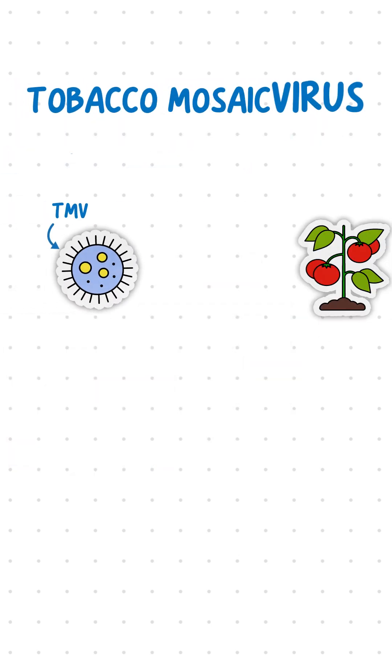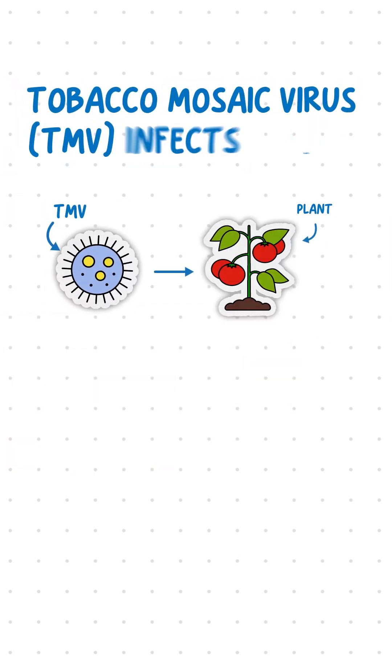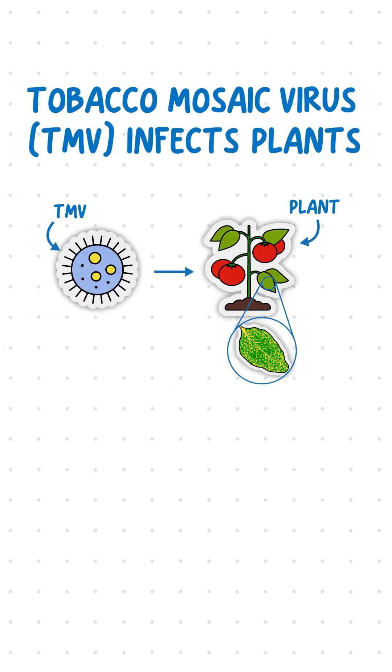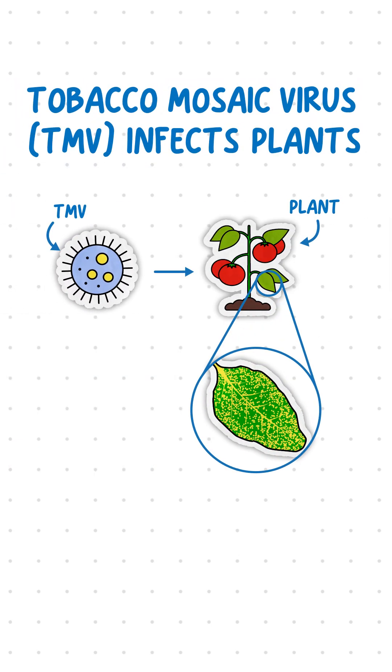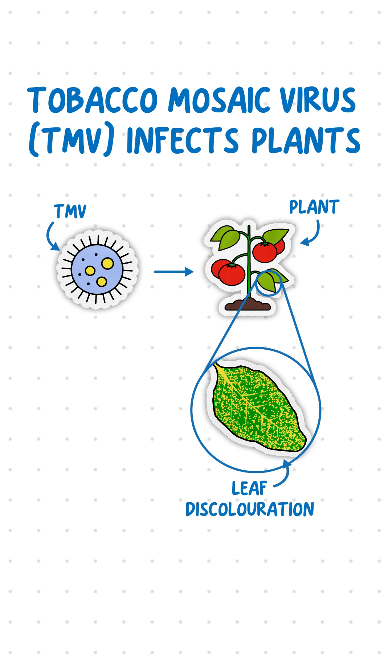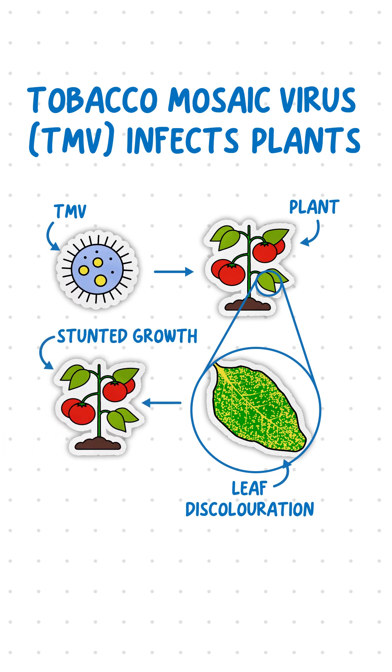Tobacco mosaic virus, TMV, infects plants, causing leaf discoloration that limits photosynthesis and stunts growth.